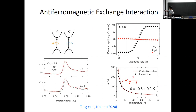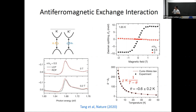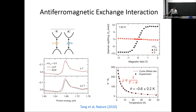Plotting the exciton energy splitting as a function of magnetic field: without any carriers the exciton Zeeman splitting is very small, but once in the Mott insulator state with one hole per Moiré cell, the exciton Zeeman splitting is much larger and rises steeply with applied magnetic field then eventually saturates. This behavior is what we expect for magnetization — the induced spin polarization as a function of the external field. Plotting the spin susceptibility as a function of temperature shows it nicely follows Curie-Weiss behavior, and the Curie-Weiss constant is negative, indicating antiferromagnetic interactions in the system.